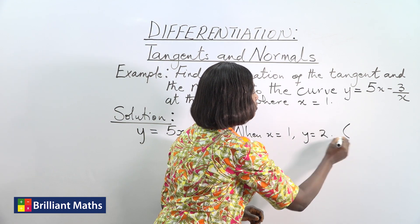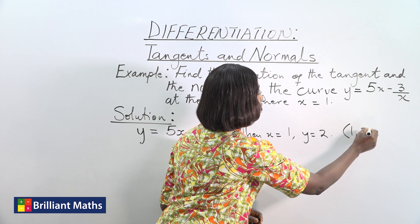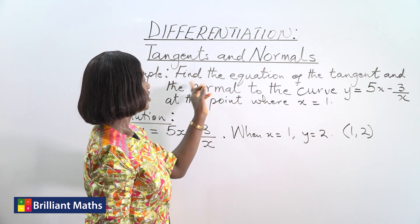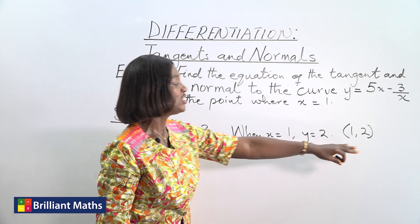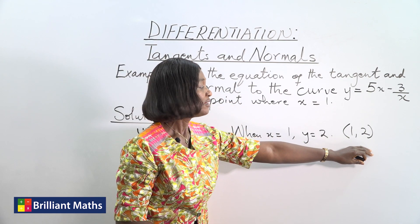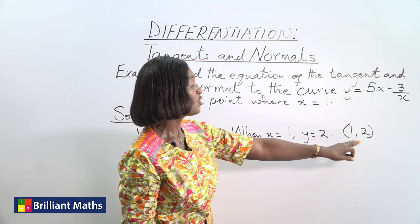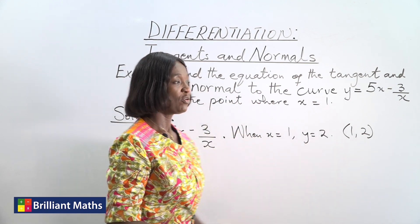So the point will be (1, 2). We're finding the equation of the tangent and the normal at the point (1, 2). So that's the exact point.